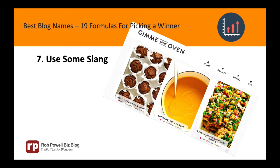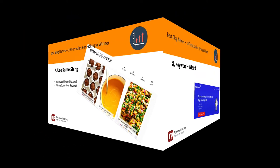Formula 7: Use some slang. Putting some slang in your blog name will give your blog name some street cred and a dash of humor. For example: 'I Want to Be a Blogger,' or 'Give Me Some Oven.'